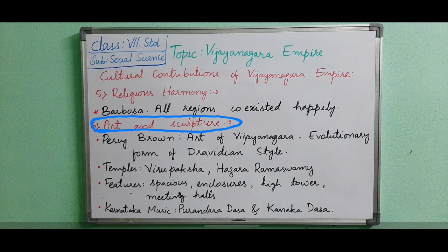They also contributed to music. Dakkani music was introduced, which is now called Carnatic music. Two famous musicians contributed: Purandaradasa and Kanadasa. These things are all related to art and sculpture.